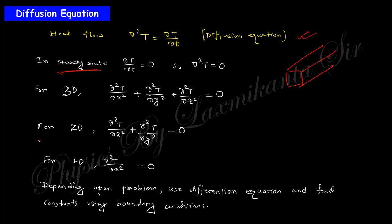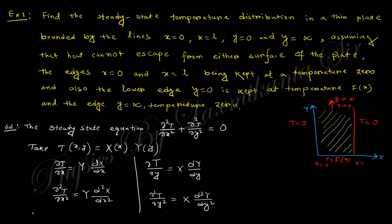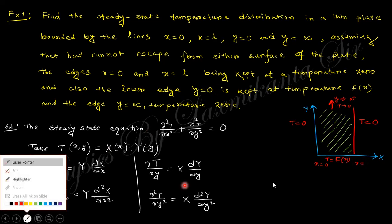In our discussion, we want to discuss the two-dimension case; one dimension is easier. These are differential equations and we need to solve this equation with specific boundary conditions. So take an example. This example says: find the steady state temperature distribution in a thin plate bounded by x equals 0 and x equals L.